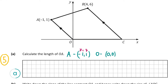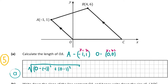We say A is (x1, y1) and O is (x2, y2). So it's the square root of (0 minus minus 1) squared plus (0 minus 1) squared. 0 minus minus 1 is 1, and 1 squared is 1. 0 minus 1 is minus 1, and minus 1 squared is also 1. So it's the square root of 1 plus 1, which equals the square root of 2. That's the length of OA.